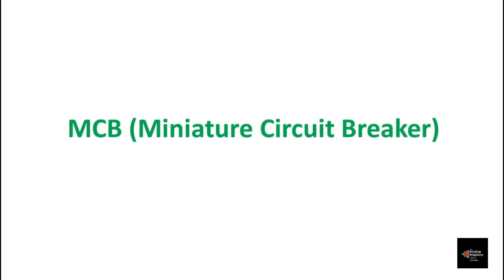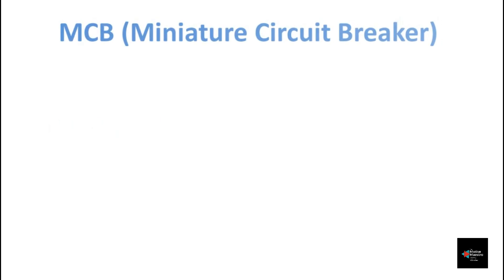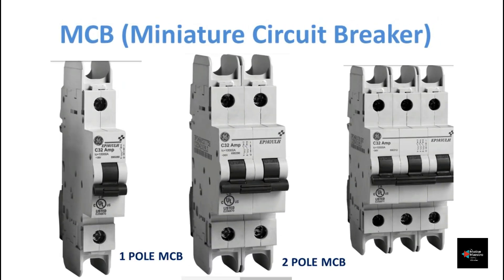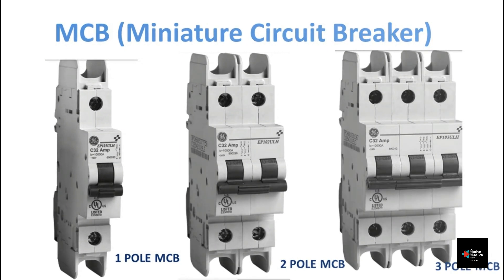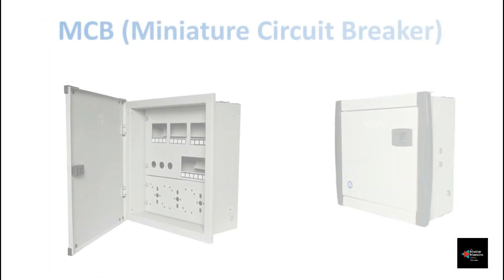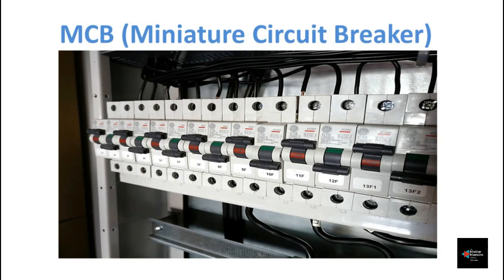Today we are going to explore the working of a common household electrical protection equipment called MCB, or Miniature Circuit Breaker. Usually these are installed in the distribution board, or DB, in the residential electrical system. Before the arrival of MCB, fuses were the equipment which fulfilled the function of MCB. MCB protects electrical equipment from overcurrent and short circuits.